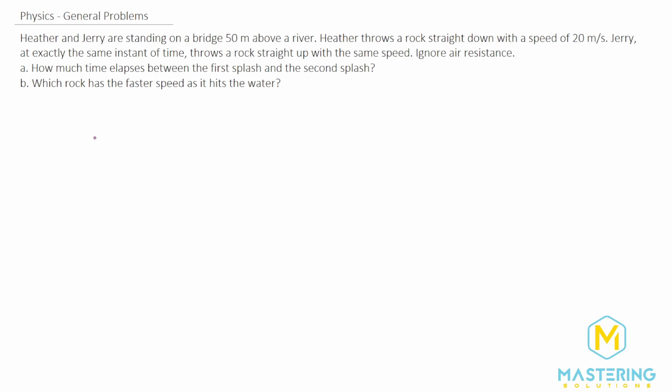Welcome to Mastering Solutions. In this general problem, they tell us that Heather and Jerry are standing on a bridge 50 meters above a river. Heather throws a rock straight down with a speed of 20 meters per second, and Jerry at the exact same time throws a rock straight up with the same speed. We can ignore air resistance for the problem.